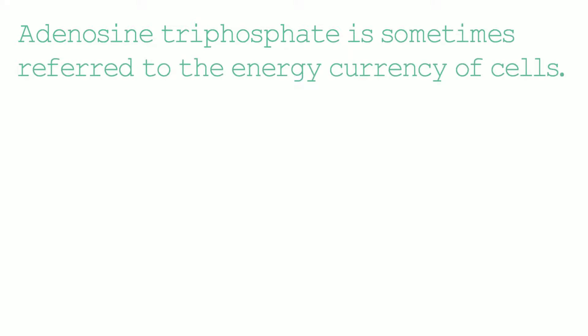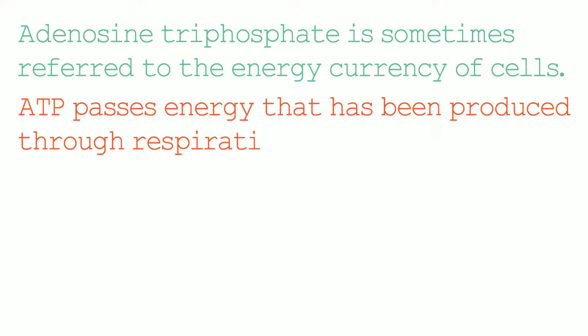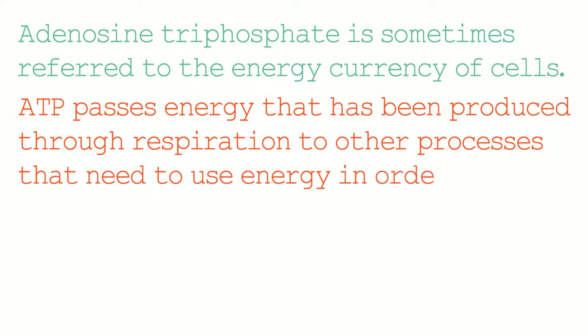ATP stands for adenosine triphosphate and it's sometimes referred to as the energy currency of cells. This is because ATP passes energy that has been produced through respiration to other processes that need to use energy in order to occur.